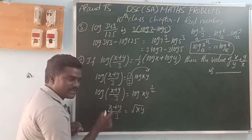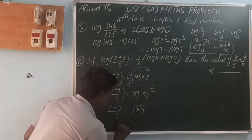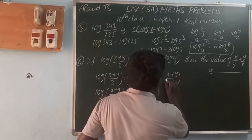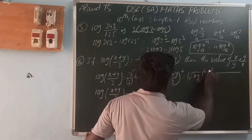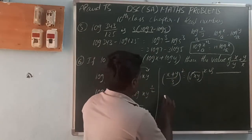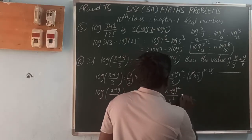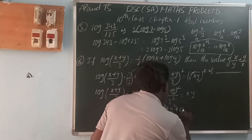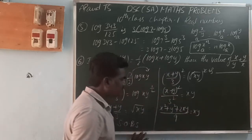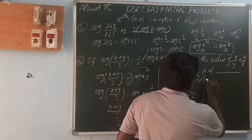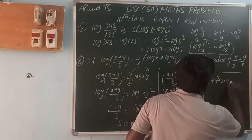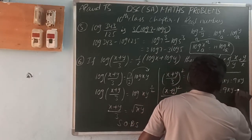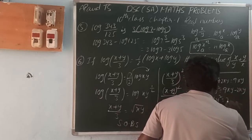Squaring both sides: (x plus y) by 3, the whole squared equals square root(xy) whole squared. The square roots cancel, giving x plus y whole squared divided by 9 equals xy. Expanding: x squared plus y squared plus 2xy equals 9xy. Moving 2xy to the right: x squared plus y squared equals 9xy minus 2xy, so x squared plus y squared equals 7xy.